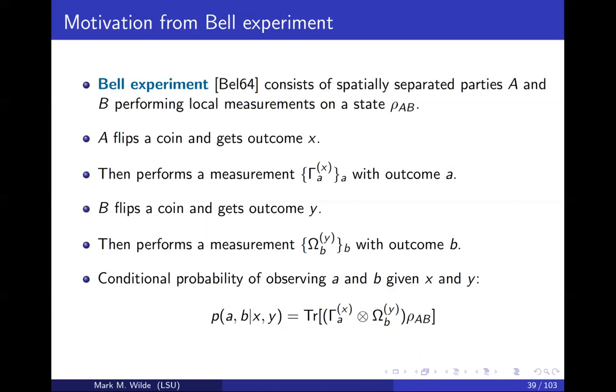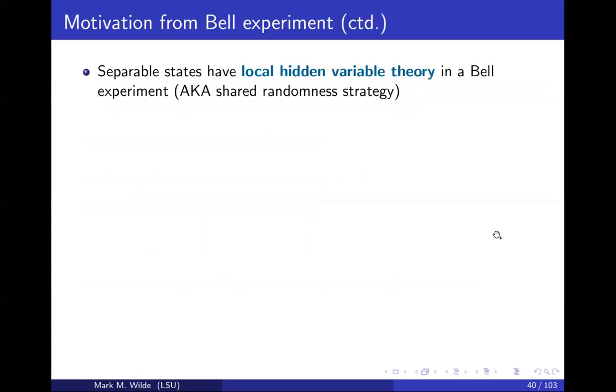A critical formula for the Bell experiment is this right here. The conditional probability of getting a and b given that x and y were selected is given by this formula. So this is again an instance of the Born rule of quantum mechanics. You have the state rho AB and these are the measurement operators corresponding to ax, b, and y.